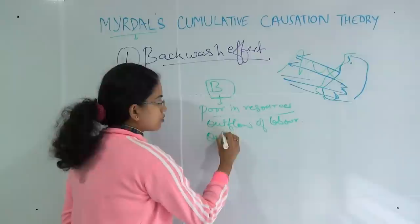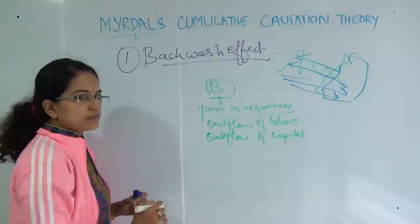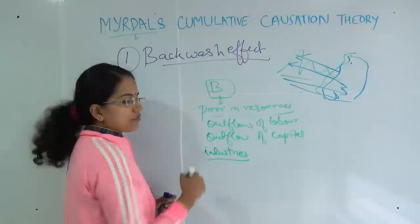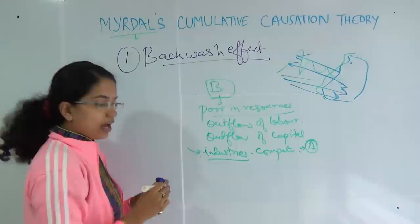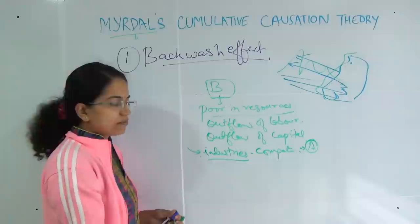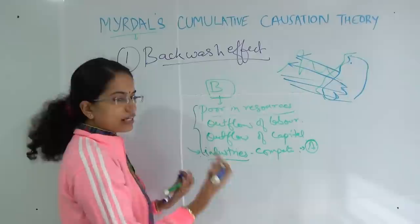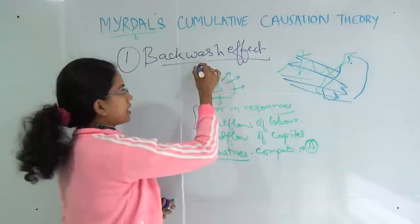There would also be an outflow of whatever capital resources are there. If there are any firms or small industries in this region, they would not be able to compete with the industries in region A. So it would be extremely difficult for the industries here to compete with those in region A. As a result, these firms would either face closure or would relocate to region A. So this region, which is already not naturally flourishing, would see movement of people, capital, and industries out of it — and this would create a backwash effect for this region.